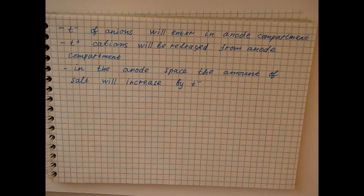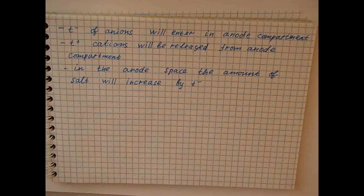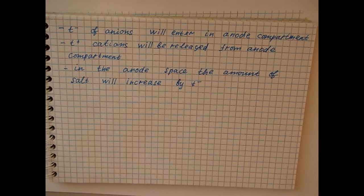Consequently, the electrolysis of the melt is accompanied by the transfer of a certain amount of salt from the cathode space to the anode.